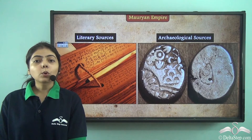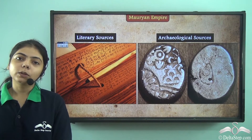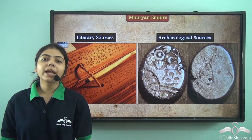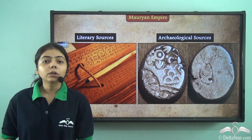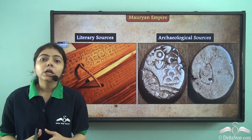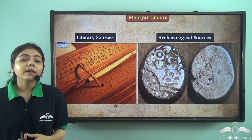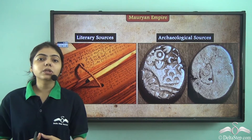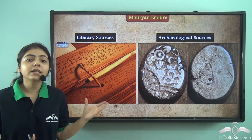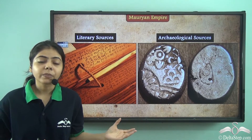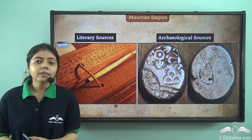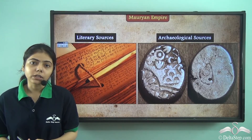We all know so many things about the Mauryan Empire, but how do we get to know about it in such detail? There are two sources of history through which we can reconstruct everything we know today: literary sources and archaeological sources.